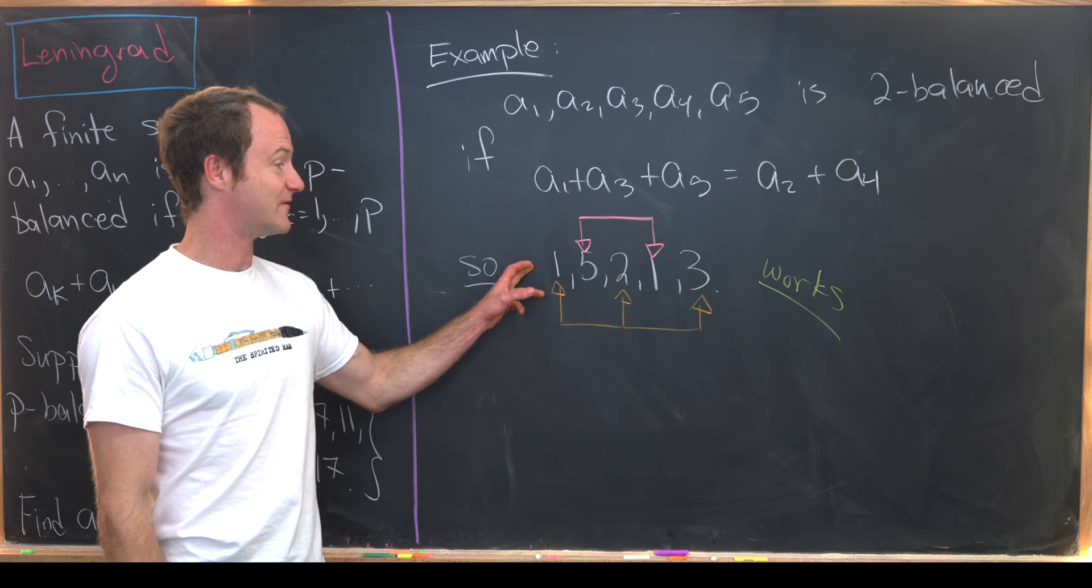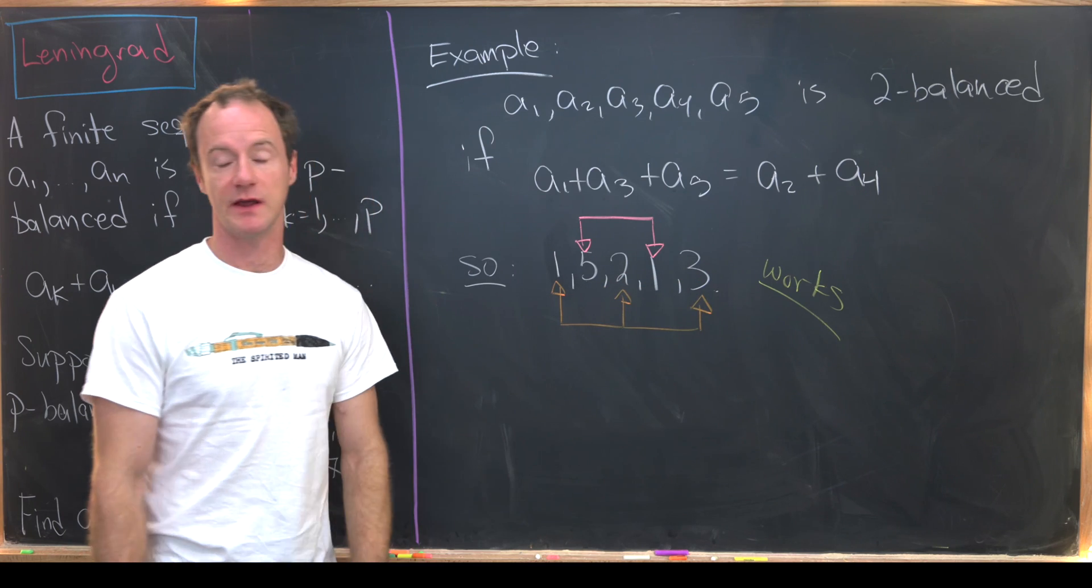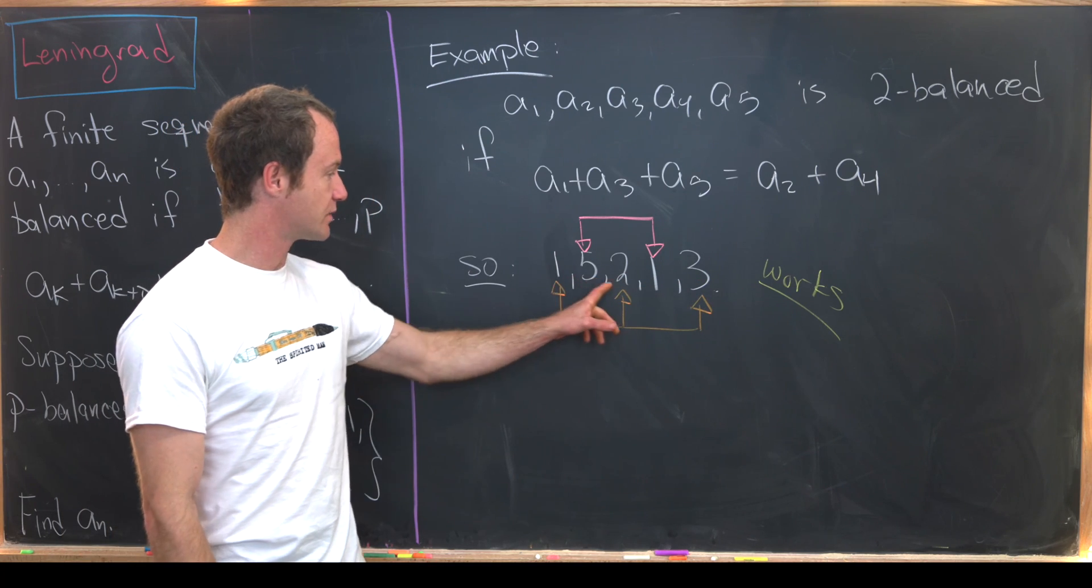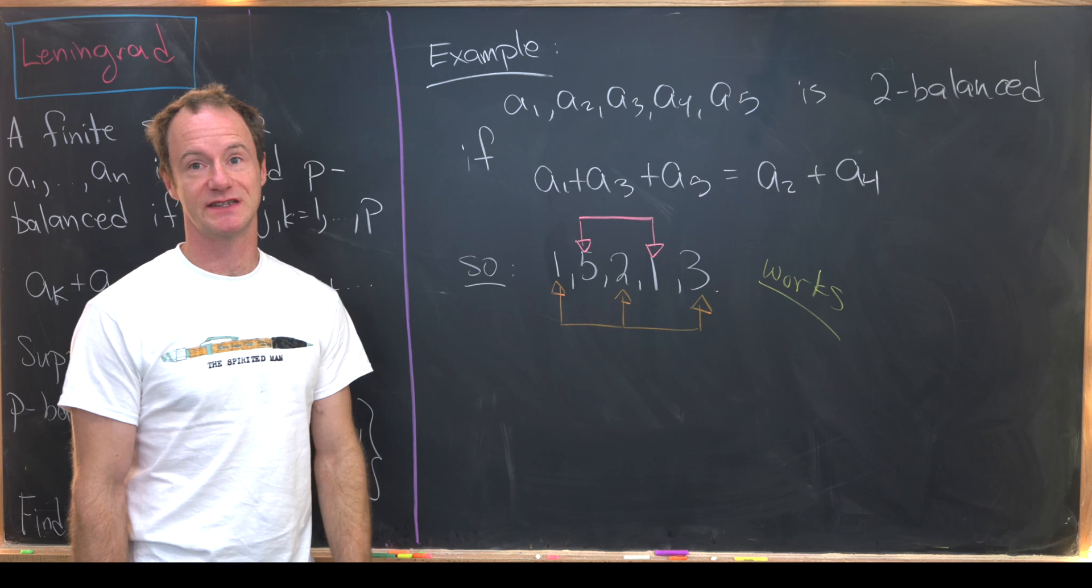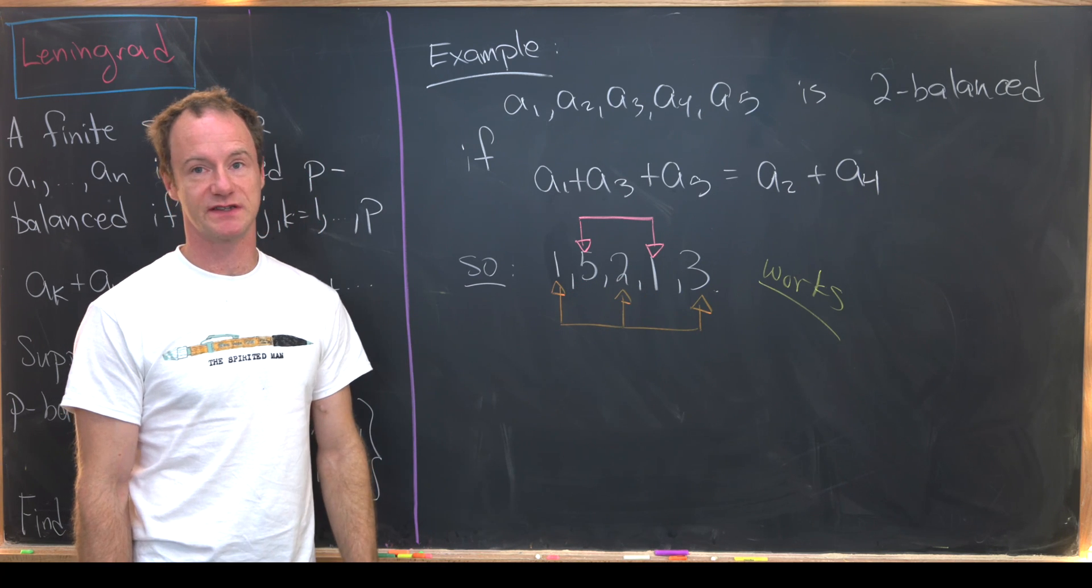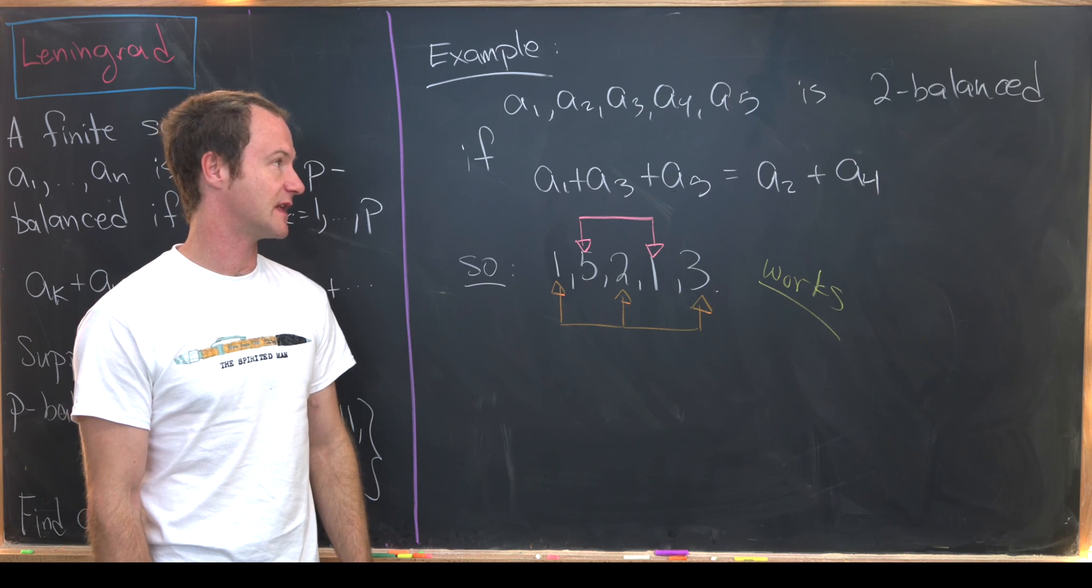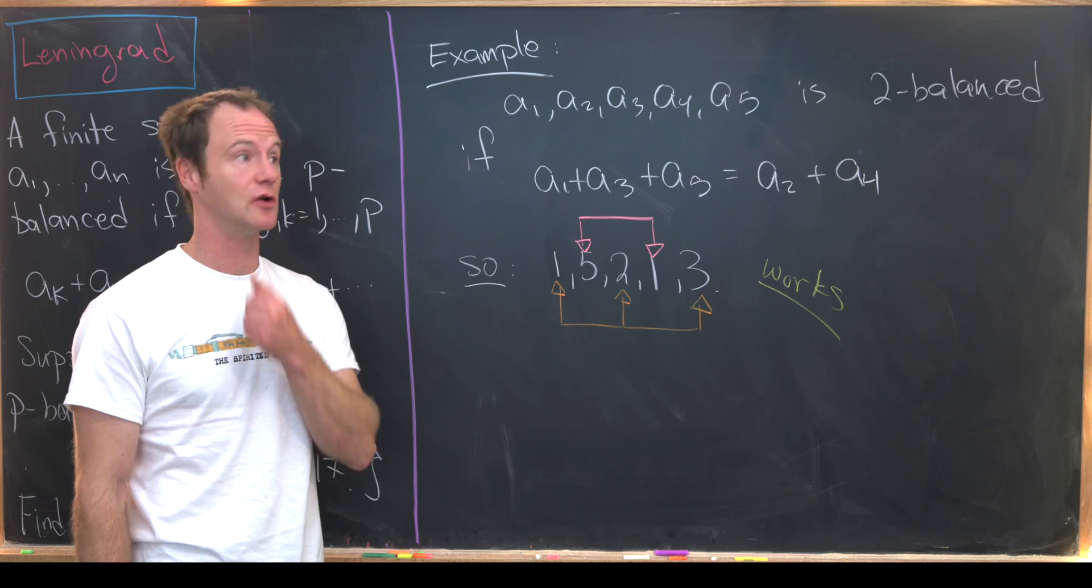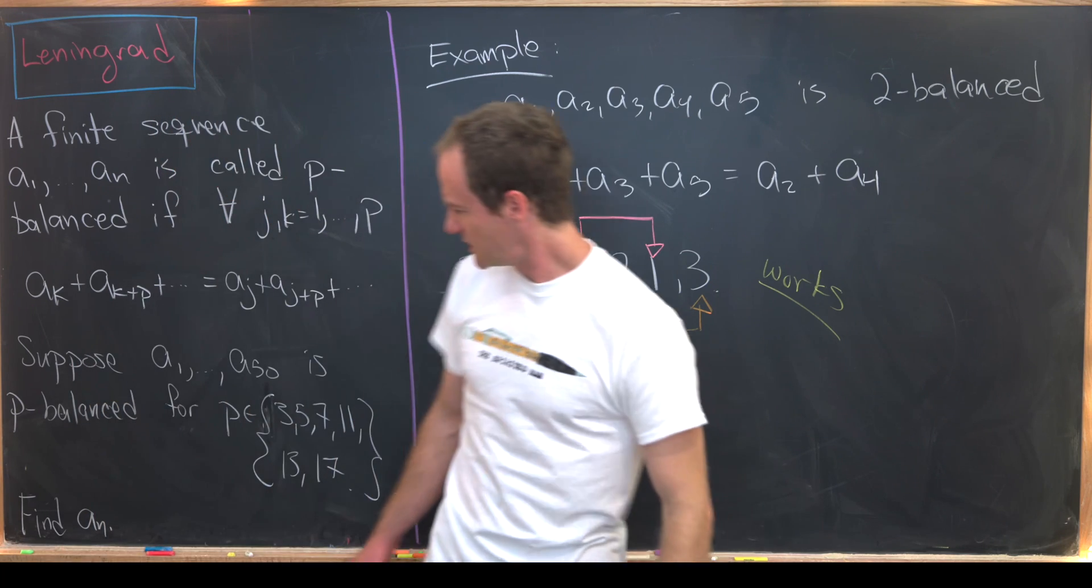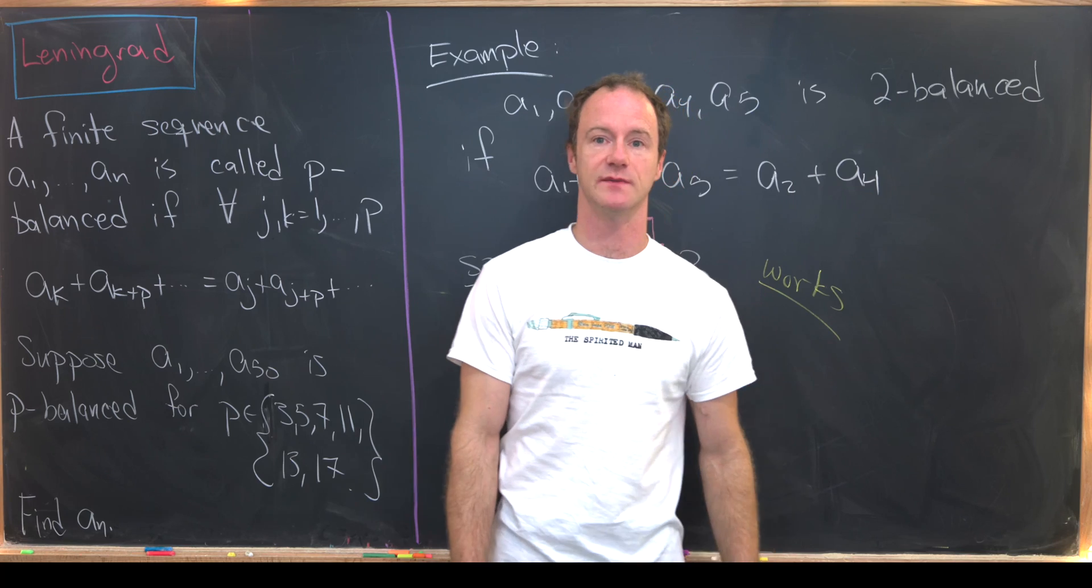So notice the following sequence works: 1, 5, 2, 1, 3. That works because 1 plus 2 plus 3 equals 6 and 5 plus 1 is also equal to 6. So it's pretty easy to cook up an example of something that is p-balanced for a single prime. Now let's see what it takes for something to be p-balanced for this collection of primes.